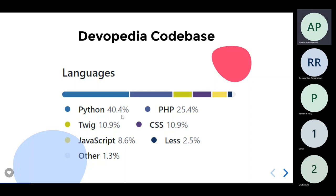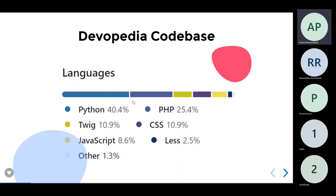The Python part is the test cases. All the automation we have done for testing is implemented in Python. If you look at this immediately, we get an insight that the code base for testing is larger than the code base for development. Even if you combine PHP with templating, it comes to only 35-36%. This underscores the importance of testing — test cases are taking more lines of code compared to the actual development code. Testing is quite an important activity and may take more time than the development itself.